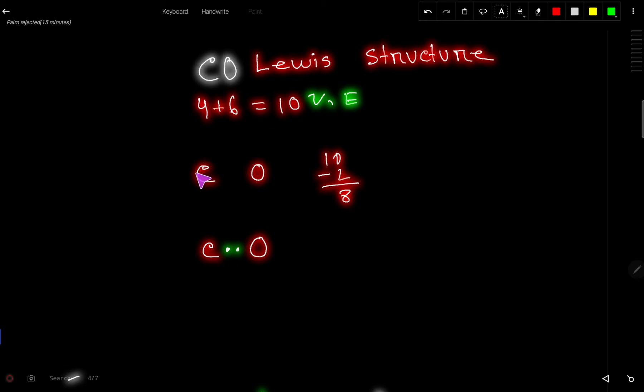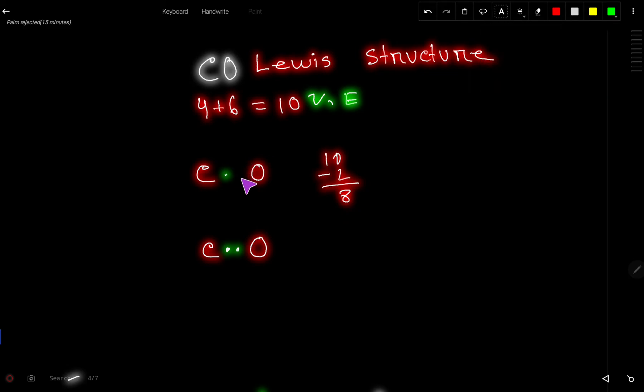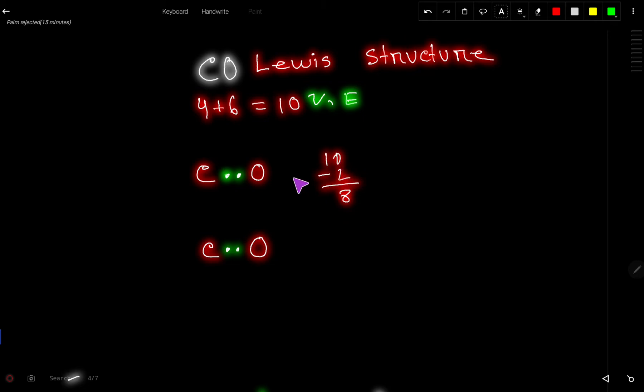Let us connect these two atoms together. We have to use two dots to connect these two atoms. So out of 10, we have used two for connecting these two atoms. We have 8 left. Now we have to satisfy the outer atom first.